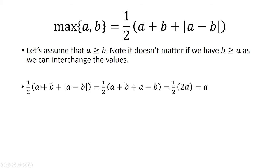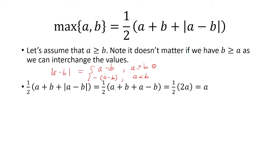Starting with the right side of the equation, because a is greater than or equal to b, the absolute value of a minus b will be just a minus b. By definition of the absolute value, you remove the absolute value when a is greater than or equal to b, and you put a negative in front when the inside is negative, or when a is less than b. So because we're in this condition, we remove the absolute value, and b minus b cancels, leaving a plus a, which is 2a. Half of 2a is a.